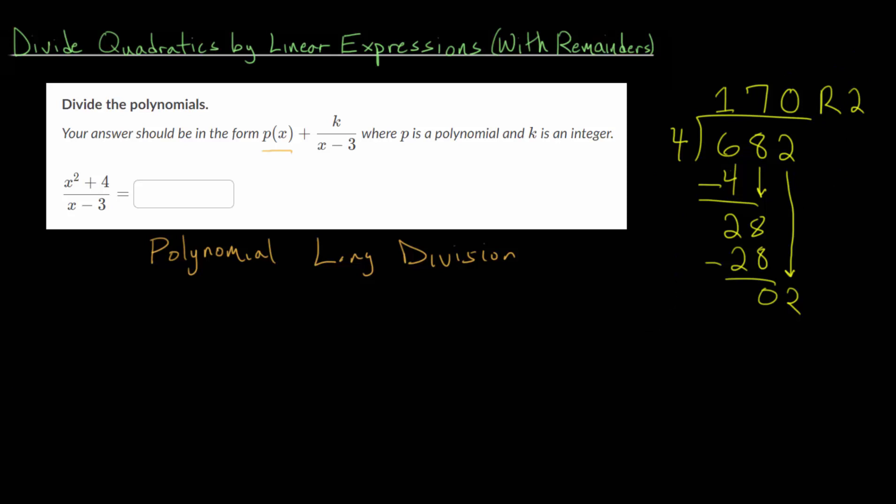But another way to write this: 682 divided by 4 equals 170, and then we have 2 left over, and we put that 2 over what we originally divided by. So 170 and 2 fourths, which simplifies to 170 and a half. The main idea is you take your remainder and put it over the divisor, the number you're dividing by.